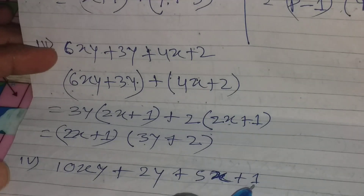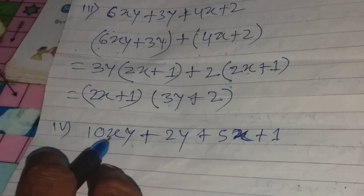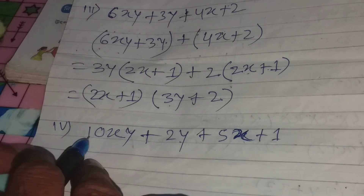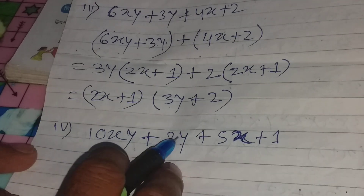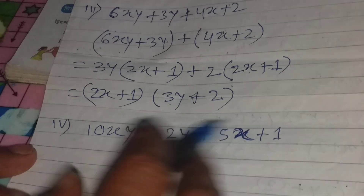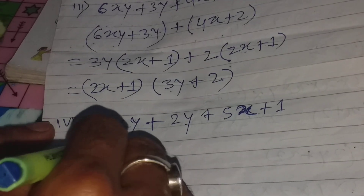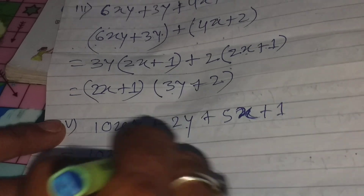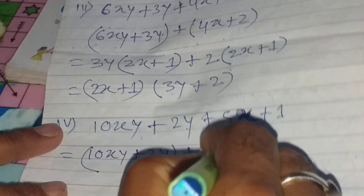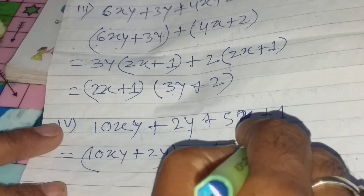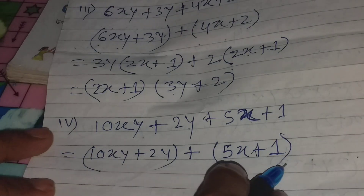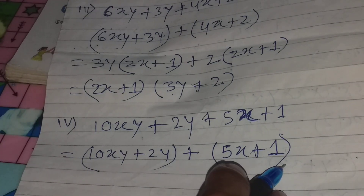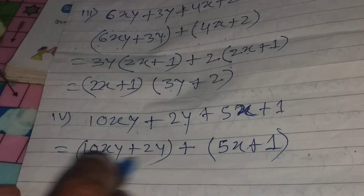Is that correct? Good. Now let's see what factoring we do here. From the first group, 10x plus 5 — take out the common factor. Y is the common. Y common. And 2y is common, with the bracket (5x plus 1) here.